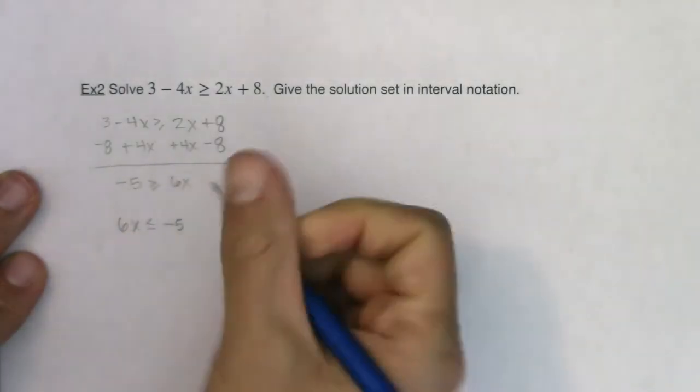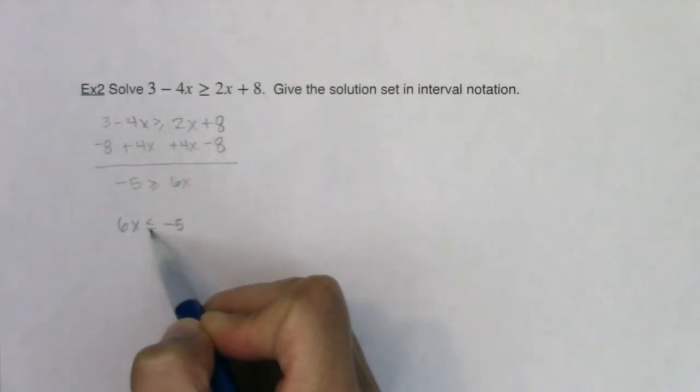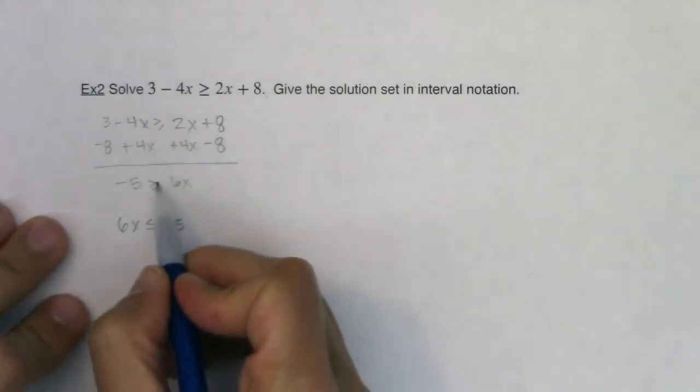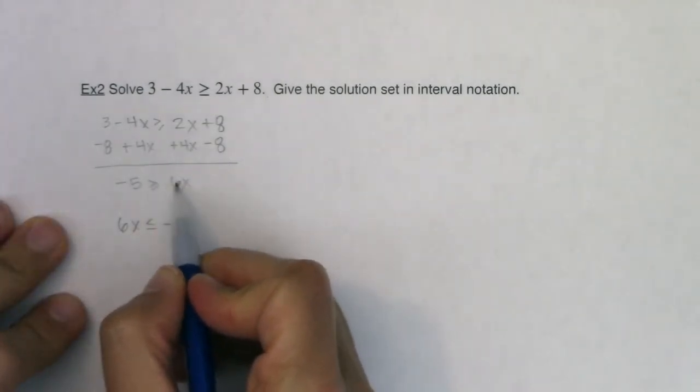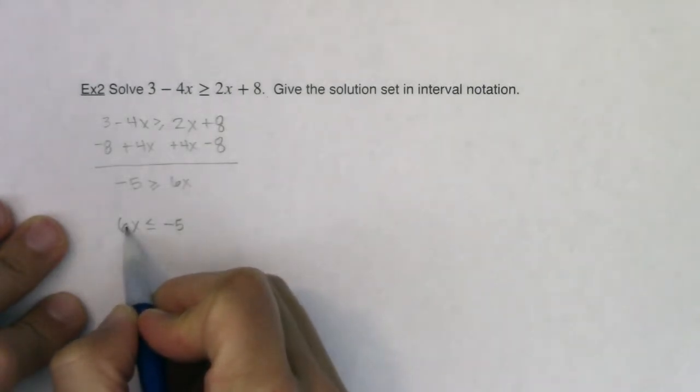So I would need to write this instead of greater than or equal to, less than or equal to. And you can see that the tip of this is pointing towards the 6x here and the tip of this is also still pointing towards the 6x, which is a good thing. That's what I want.